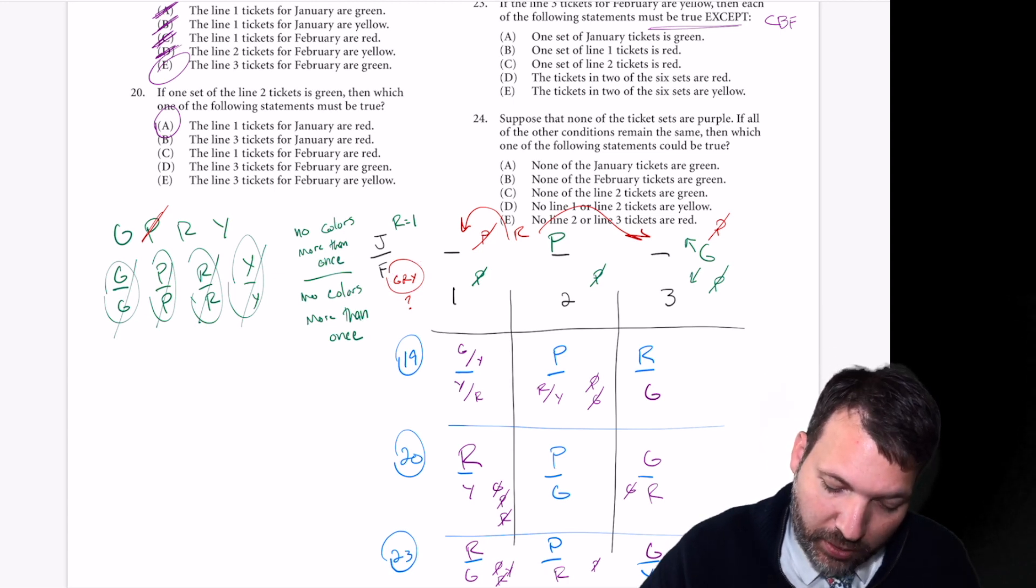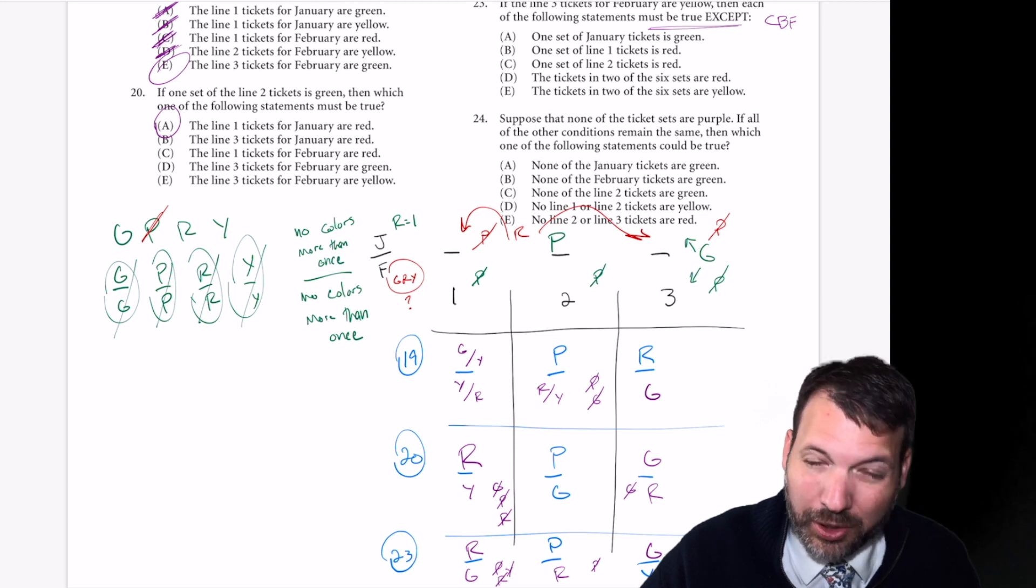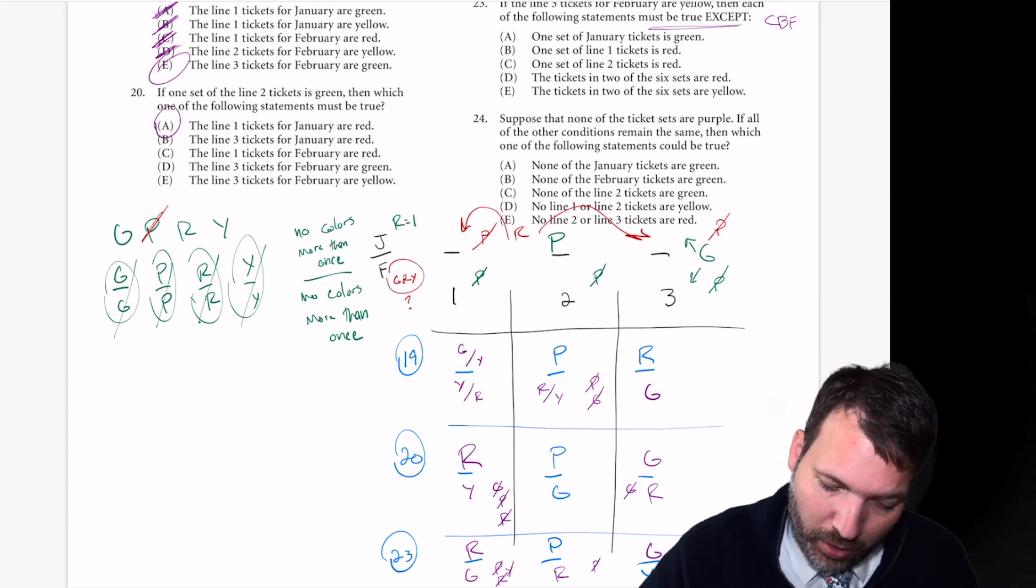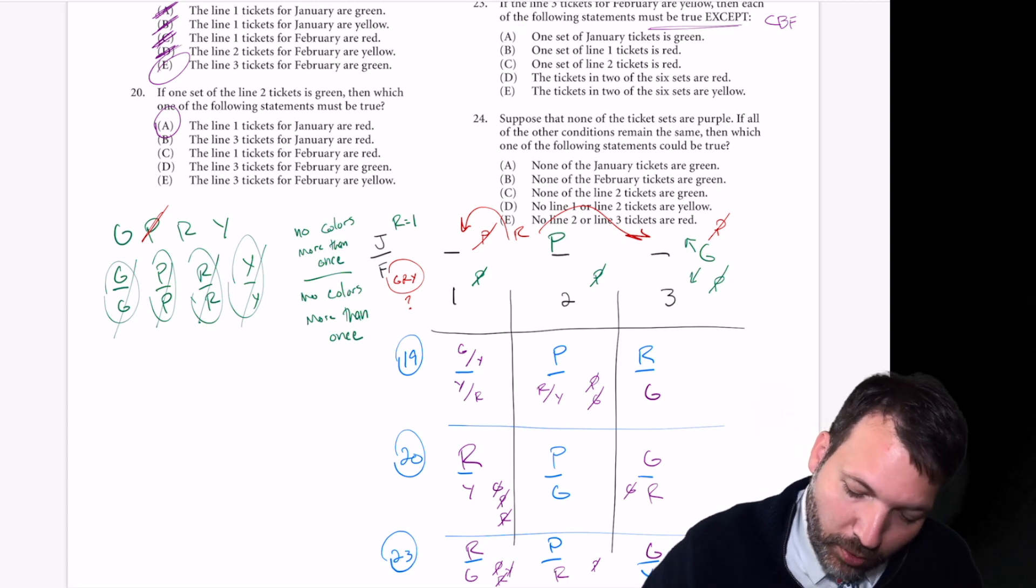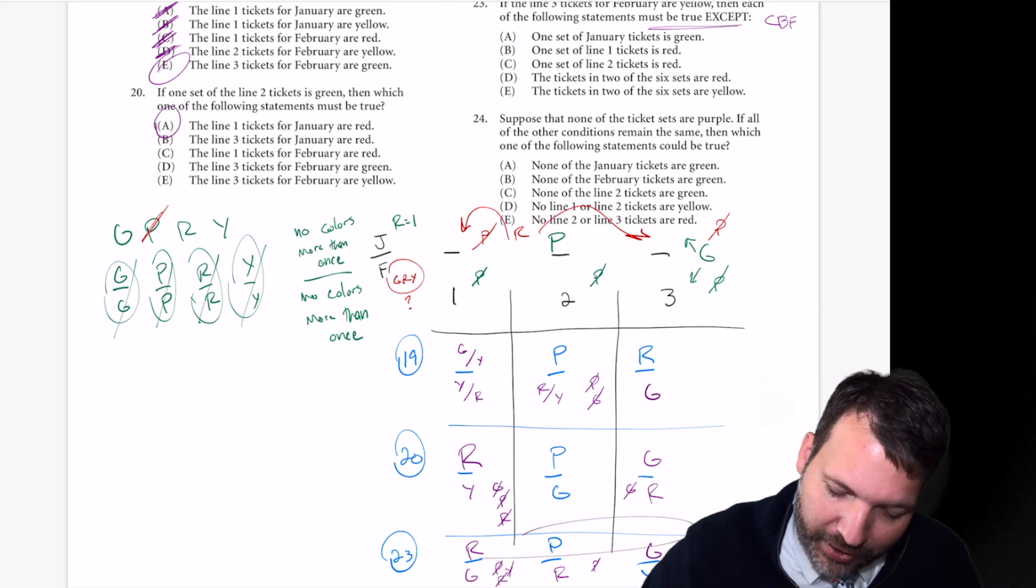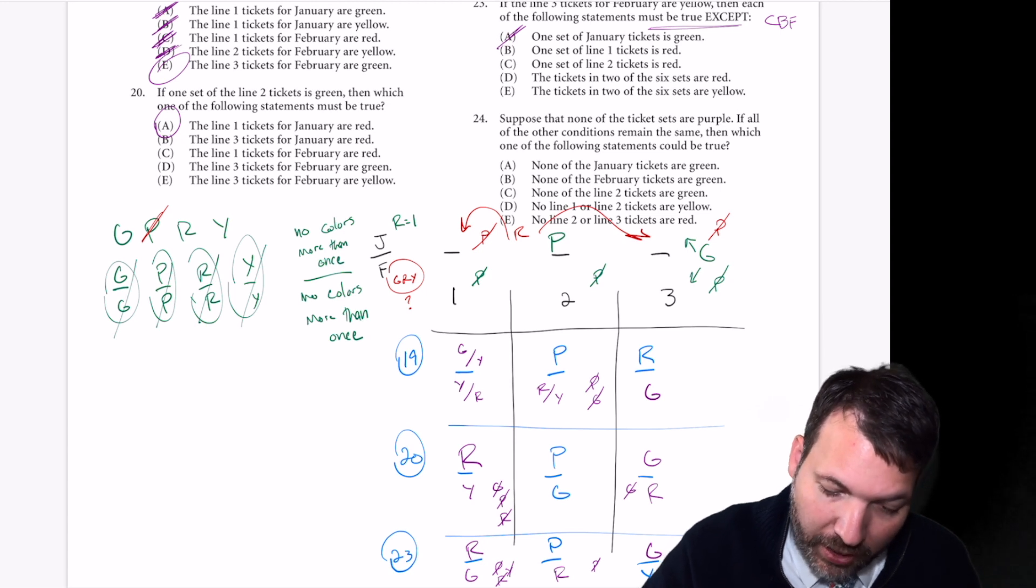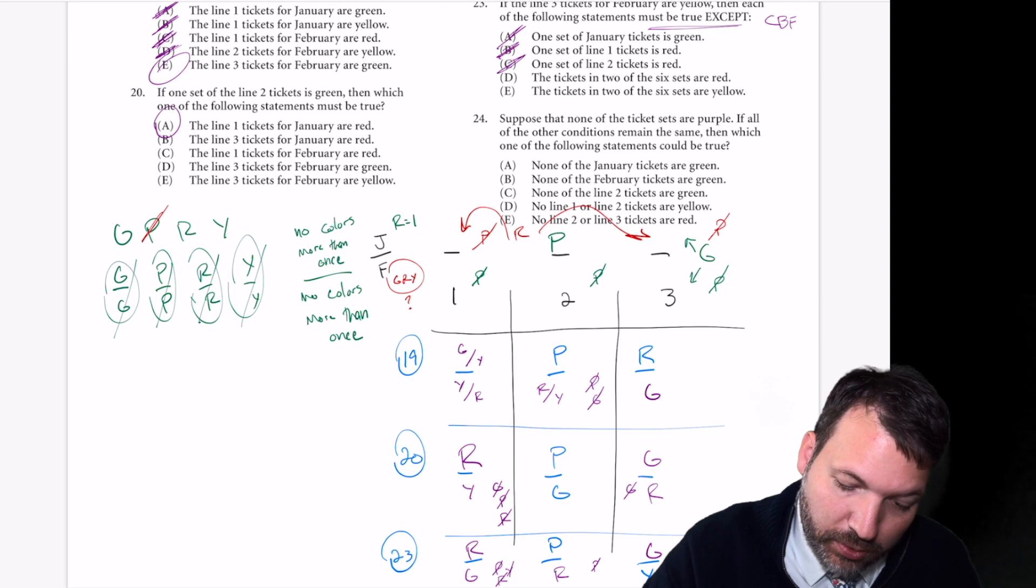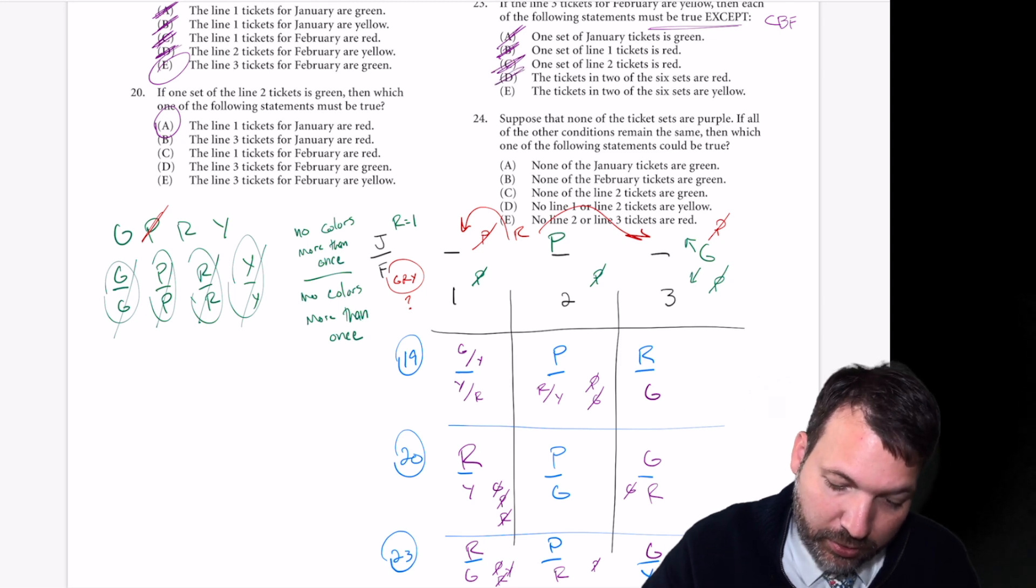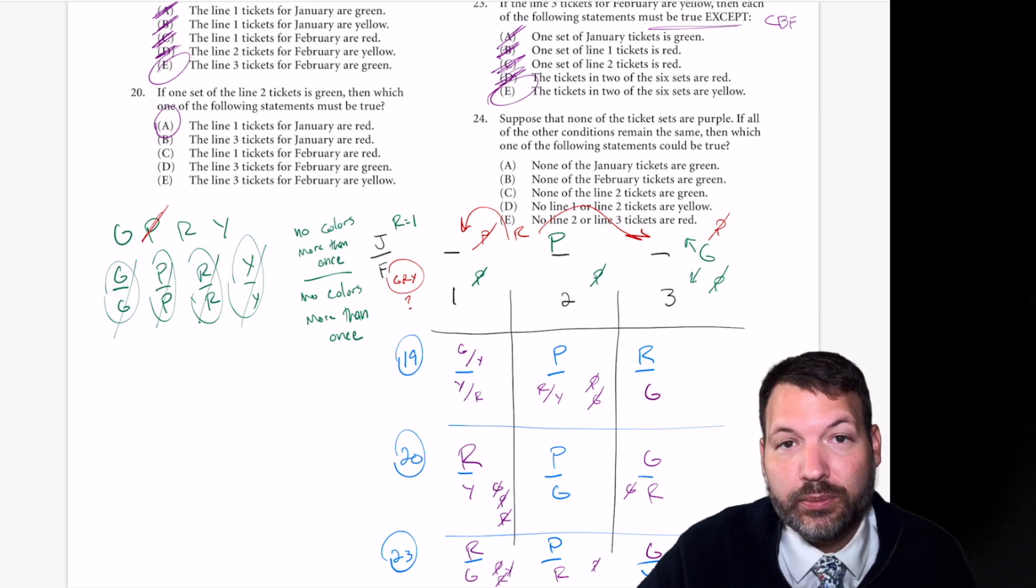All right, so could be false. One set of January tickets is green. I'm going to cross off all the must be trues. One set of January tickets are green. That's true. So I'm going to cross off A. One set of line one tickets is red. Also true. Cross off B. One set of line two tickets is red. Yep. The tickets in two of the six sets are red. That is also true. Should be E. Circle E and let's move on.